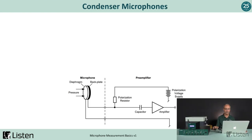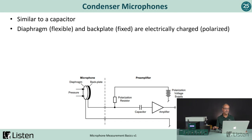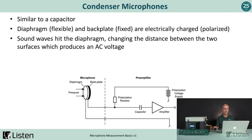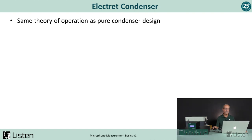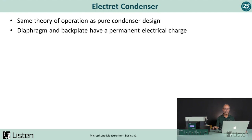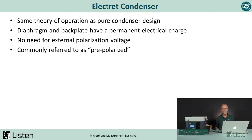Now let's talk about condenser microphones. Condenser microphones are similar to a capacitor — they have a flexible diaphragm and a rigid back plate that are electrically charged or polarized. When sound waves hit the diaphragm, changing the distance between the two surfaces, that produces an AC voltage — that's where our signal comes from. In the electret condenser, the diaphragm and back plate have a permanent electrical charge embedded in them, so we don't need any outside electrical bias. These are commonly referred to as pre-polarized microphones, and in fact the Listen SCM3 is an electret condenser microphone.